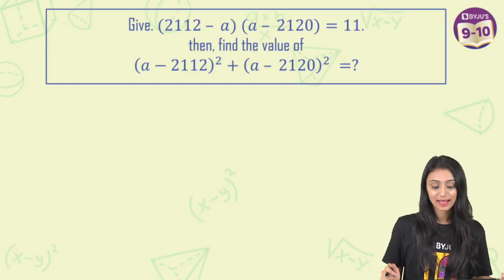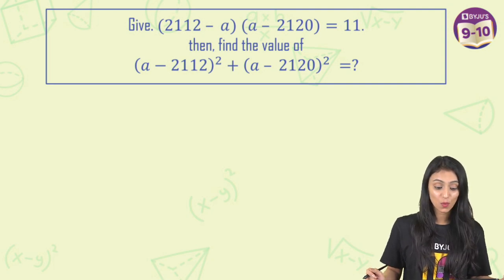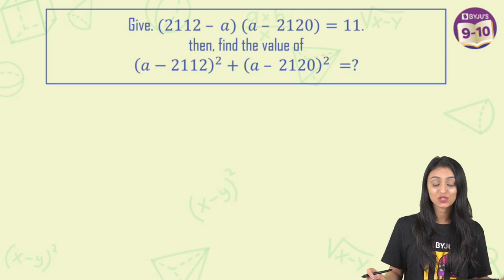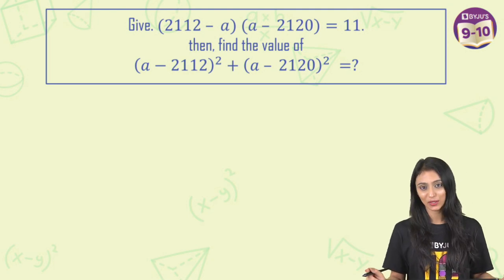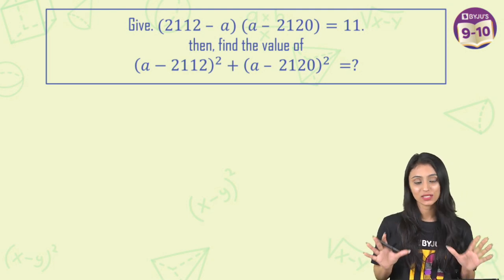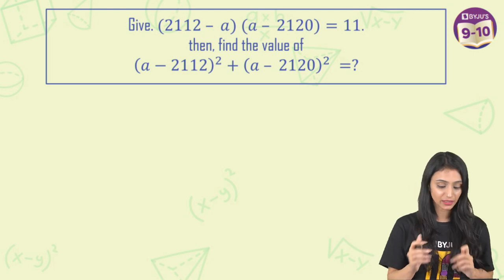So given (2112-a)(a-2120) = 11, then find the value of (a-2112)² + (a-2120)². What is that going to be? Now when you come across questions like this, first you just observe the data that is given.